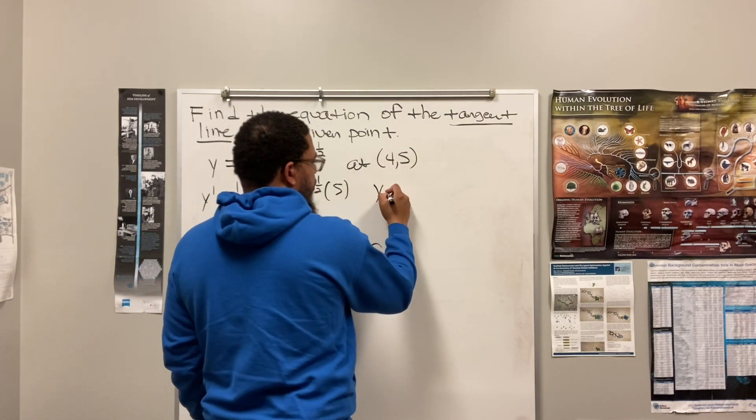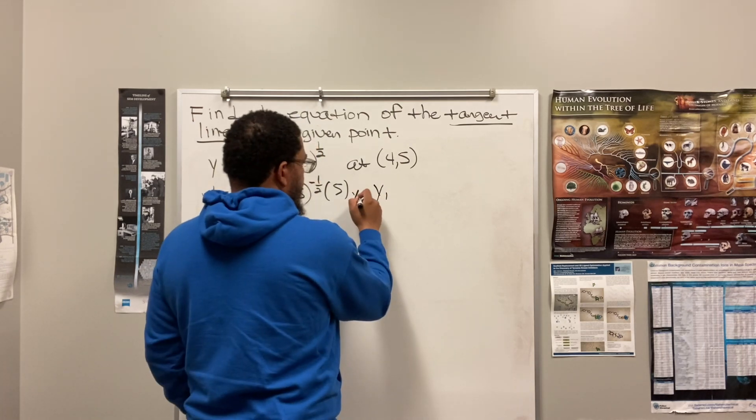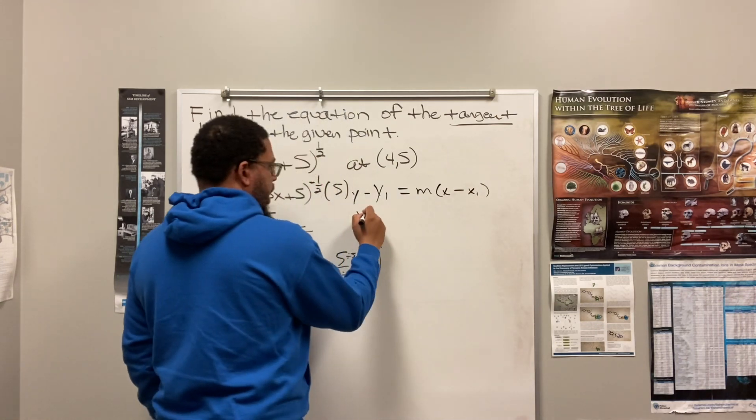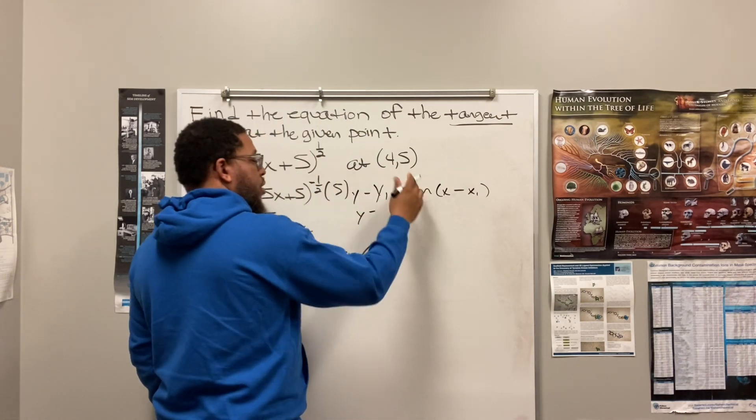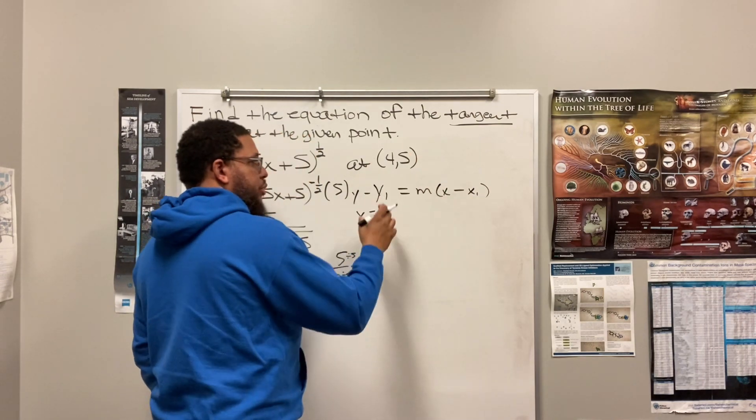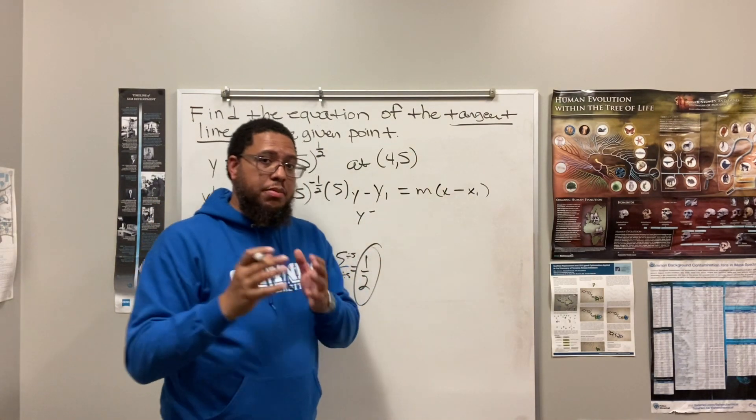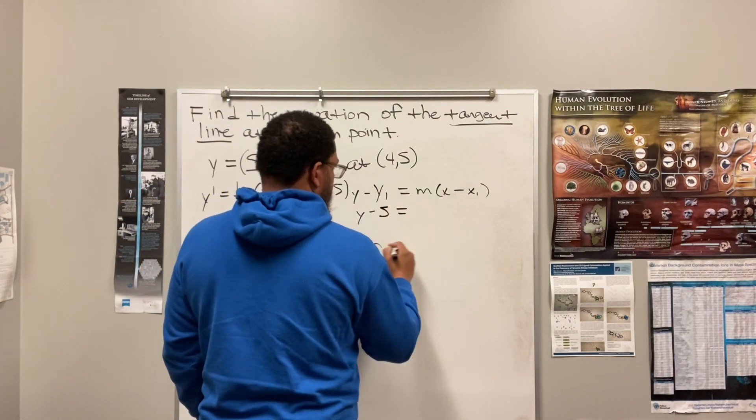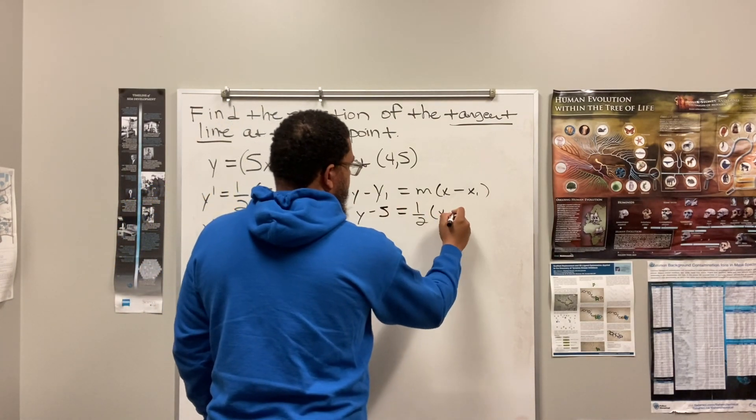Now, let's use point-slope form. Y minus Y1 equals M times X minus X1. So, Y minus Y1 is 5. 5 is not Y. We use Y1 and X1 for the values of the X and Y value of our given point. Keep that in mind, too. So, that's Y minus 5 is equal to 1 half times X minus 4.